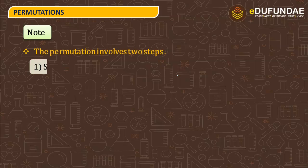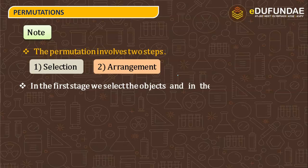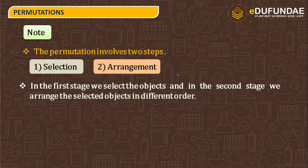Note: permutation involves two steps. The first step is selection and the second is arrangement. Permutation is a two-step process — first you select objects and then you arrange them. In the first stage we select the objects, and in the second stage we arrange the selected objects in a different order.